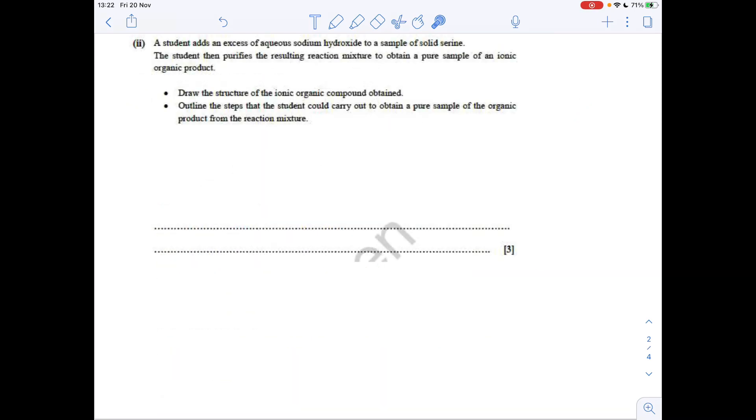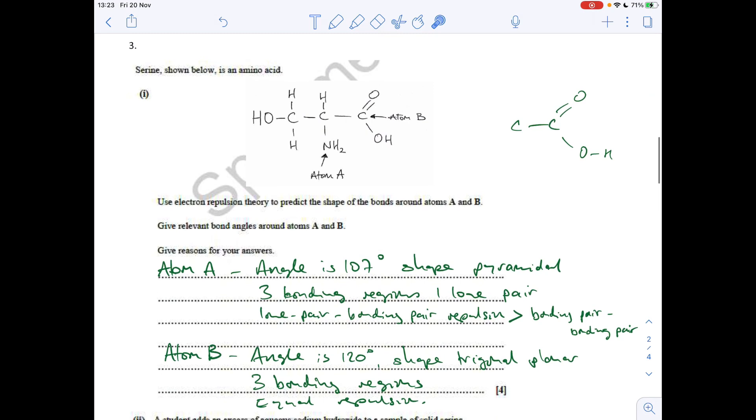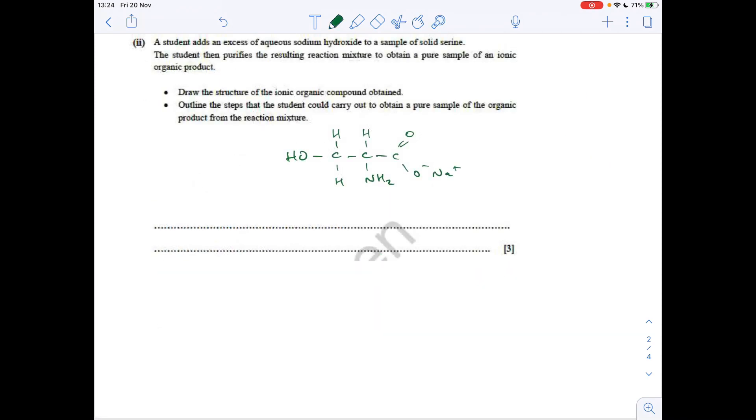Next part of the question, student adds excess aqueous sodium hydroxide to a sample of solid serine, purifies the mixture to get the pure ionic organic product. Draw the structure of the ionic product obtained. If we just have another look at serine, what part of the molecule can react with sodium hydroxide? It's just the carboxylic acid group. This alcohol group doesn't react with sodium hydroxide.